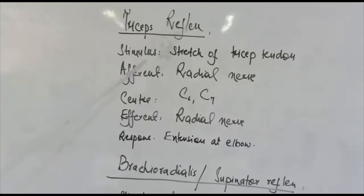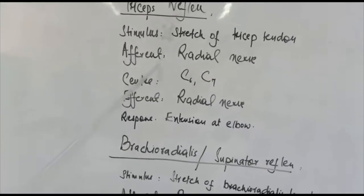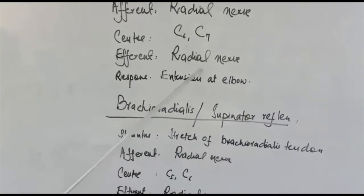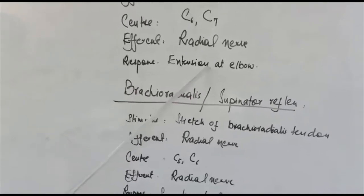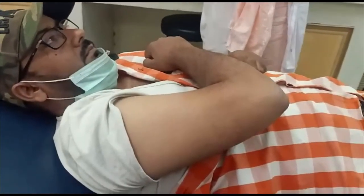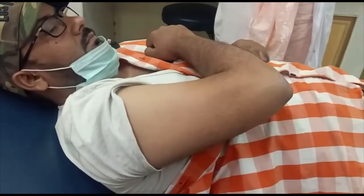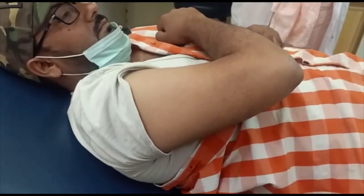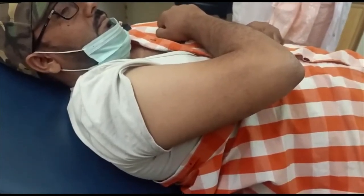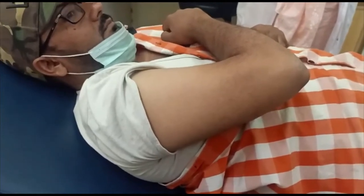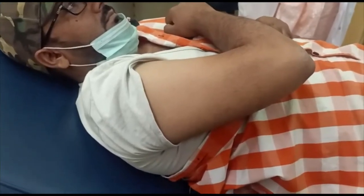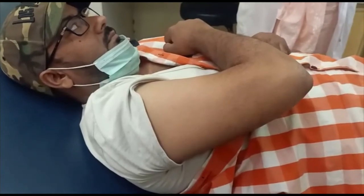In the tricep reflex, the stimulus is stretch of the tricep tendon, the afferent is the radial nerve, the center is C5 and C6, and the efferent is the radial nerve. The response is extension at the elbow. Note: in the bicep reflex, we place our thumb over the tendon of the bicep muscle and do not directly apply the clinical hammer, because the bicep tendon is delicate and direct hammer application could crush or damage it.